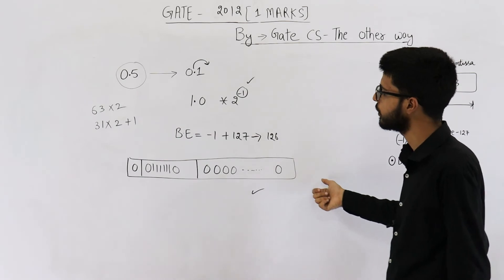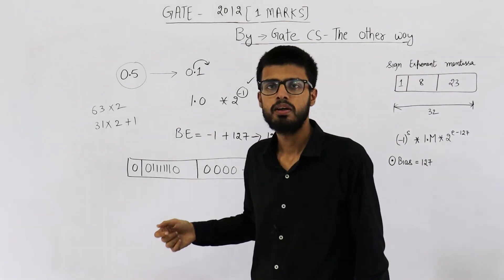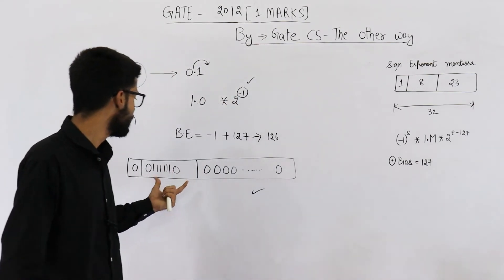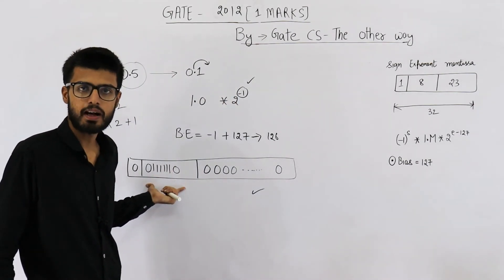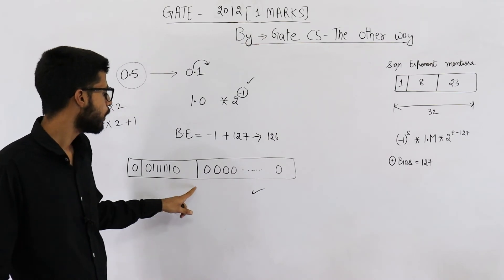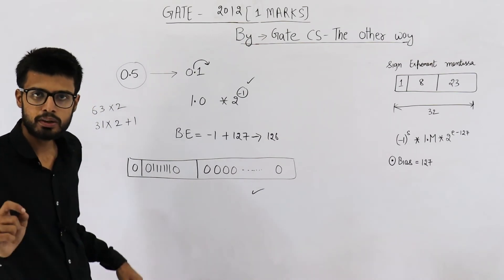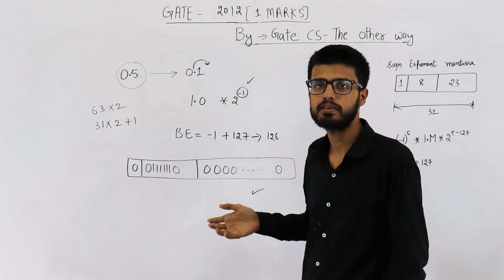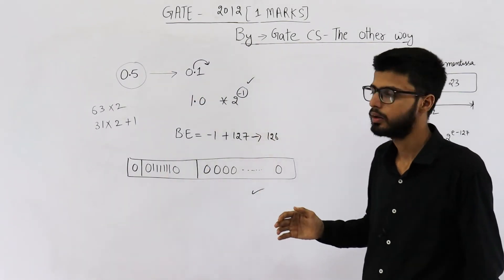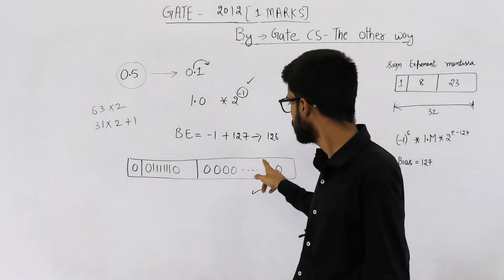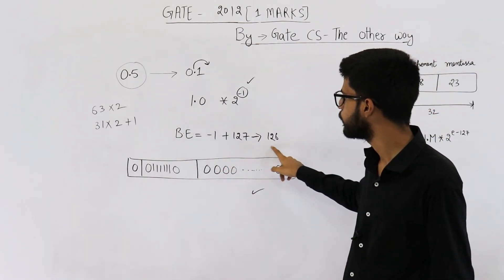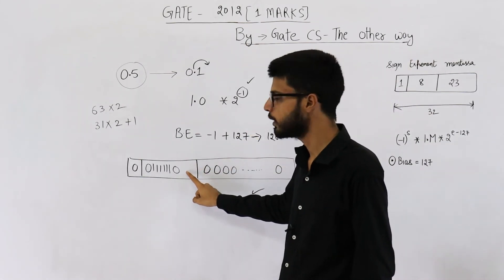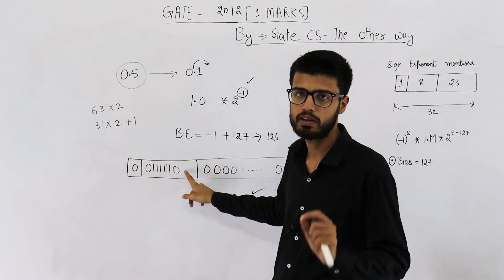And yeah, some students have this doubt that when mantissa is 0, the pattern might represent some special number. No, we have to decide on the basis of exponent. If exponent is 0 or exponent is all 1s, only in these two cases you have some special representation. For example, plus 0, minus 0, not a number, infinity, and all that. It is not decided on the basis of mantissa. Yeah, mantissa has a role to play. But before that, exponent has to be all 0s or all 1s.